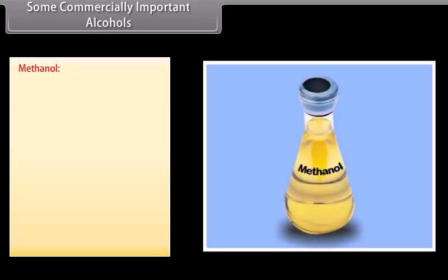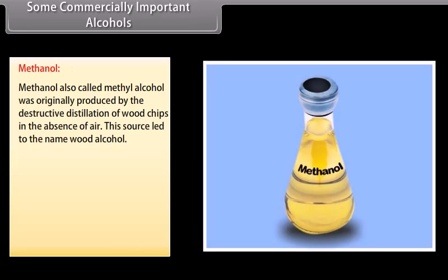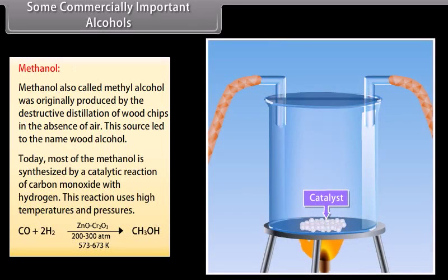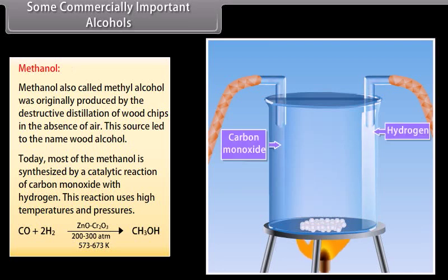Some commercially important alcohols — Methanol: methanol, also called methyl alcohol, was originally produced by the destructive distillation of wood chips in the absence of air; this source led to the name wood alcohol. Today, most of the methanol is synthesized by a catalytic reaction of carbon monoxide with hydrogen.